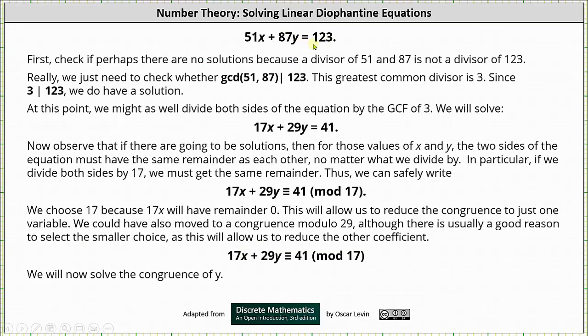So given our equation, first check if perhaps there are no solutions because a divisor of 51 and 87 is not a divisor of 123. If a divisor of 51 and 87 is not a divisor of 123, then there are no integer solutions.